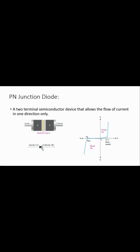The diode symbol shows the anode representing the positive side and the cathode representing the negative side. When we use diodes in circuits, we encounter characteristic graphs. The actual graph obtained when using diodes in circuits will be used to compare against each model we study.